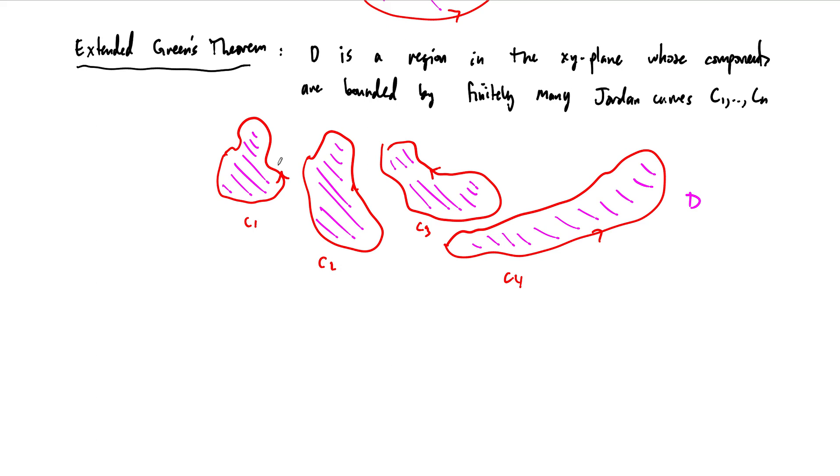Now, in this case, we shouldn't be surprised because Green's Theorem applies on each individual portion of this region. So, if we wanted to prove this, we could just break it up into pieces, right? We could break up the region D into its components. These are called components. And then we could just treat each individual component as a different region and put it all together at the end. This should not be a surprise.